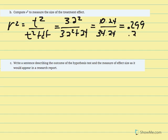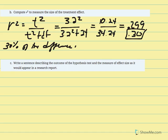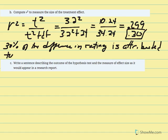We can express r squared as 30 percent — 30 percent of the difference in ratings of the cartoons based on whether we're smiling or frowning is attributed to the facial expression condition. So 30 percent of the average difference of 1.6 is explained by smiling versus frowning.